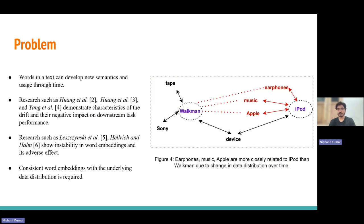Words can develop new semantics. Research like Wang et al. shows the negative impacts of outdated word embeddings on NLP applications. As illustrated in Figure 4, over time, Apple connotes iPod more strongly than Walkman. Similarly, terms like music and earphones exhibit closer proximity to iPod within the vector space. So word embeddings must be periodically updated over time to ensure robust representation.